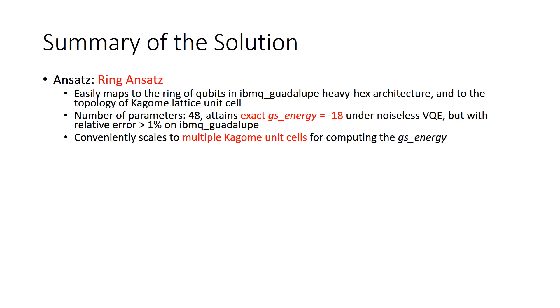So in order to summarize the important components of the solution, first, ansatz. I have used ring ansatz, which will be discussed in the next few slides. The circuit has 48 parameters and it attains the ground state energy exactly, minus 18, under noiseless condition by running the variational quantum eigensolver. On the real hardware, however, the relative error is in excess of one percent.